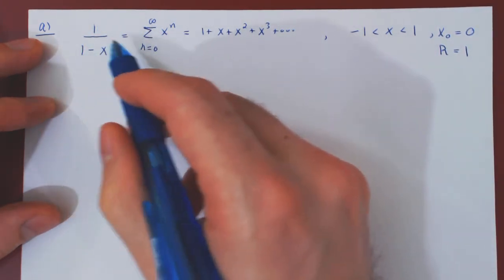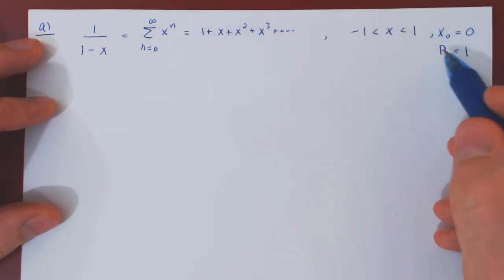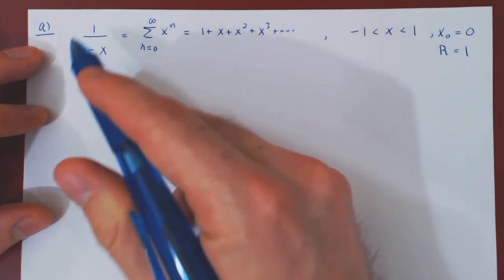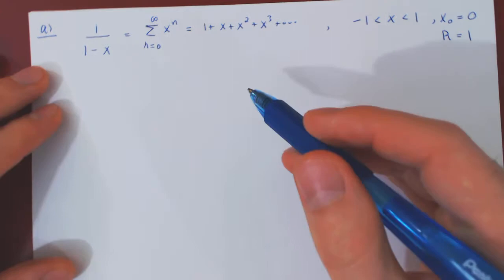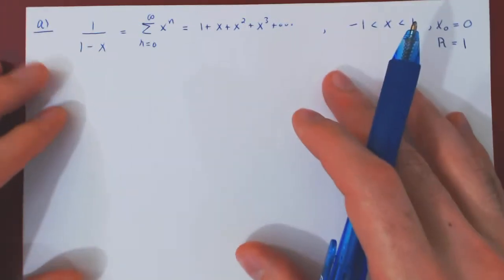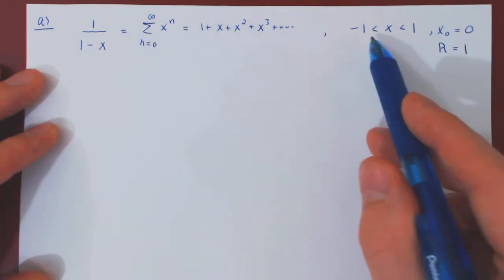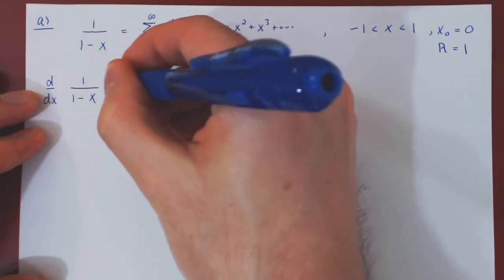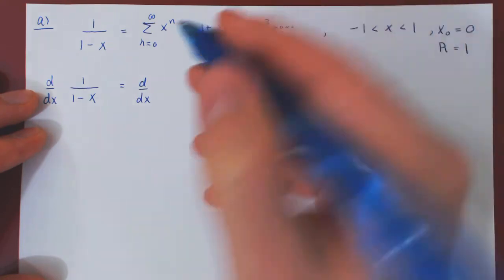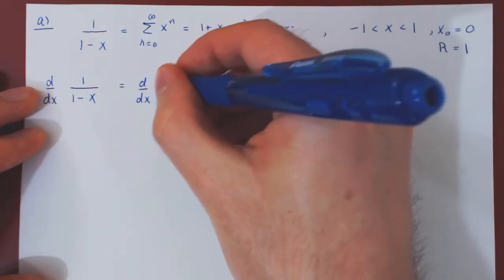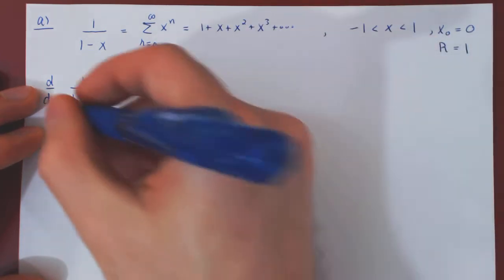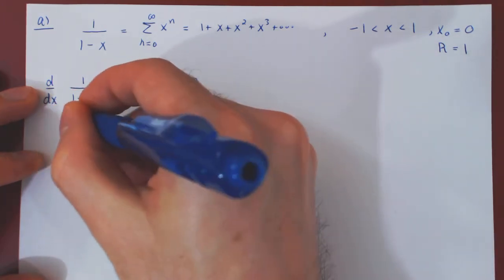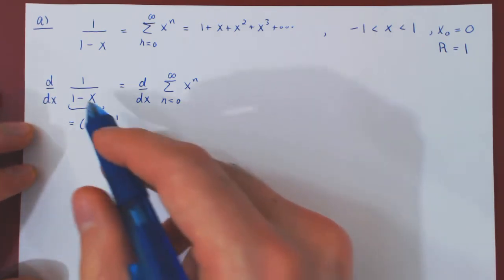We have expressed 1 over 1 minus x as a power series with center 0 and radius of convergence 1. Let's now use term-by-term differentiation to generate a power series for the derivative of 1 over 1 minus x. Both functions are equal on this open interval, so we can differentiate both sides. For the left-hand side, do not use the quotient rule to differentiate 1 over 1 minus x.